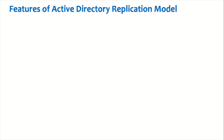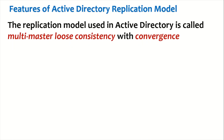Now let us dive into the features of the active directory replication model. There are four prominent features. The replication model used in active directory is called multi-master loose consistency with convergence.